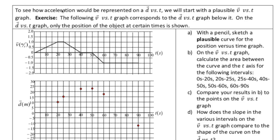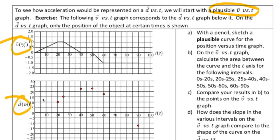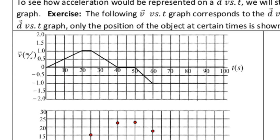We're moving on to a more plausible V versus T graph. What that means is that we're not going to have any instantaneous accelerations or anything like that. What we're going to do this time is focus on the V versus T first, and then the D versus T. On the D versus T, I've already plotted the various positions.